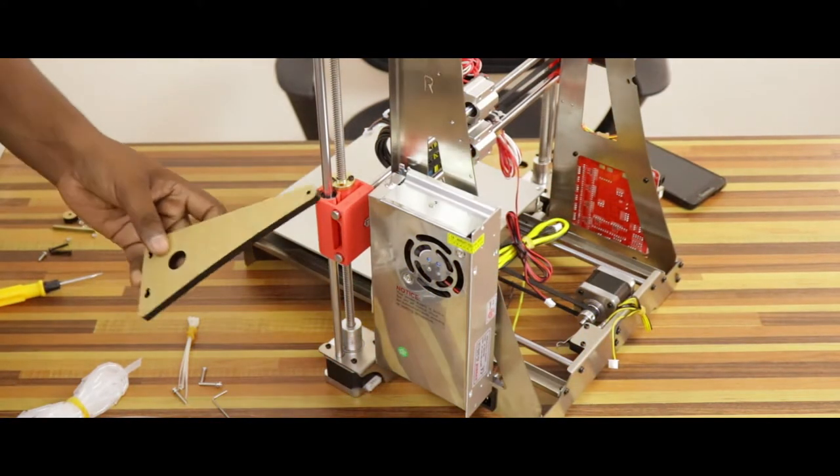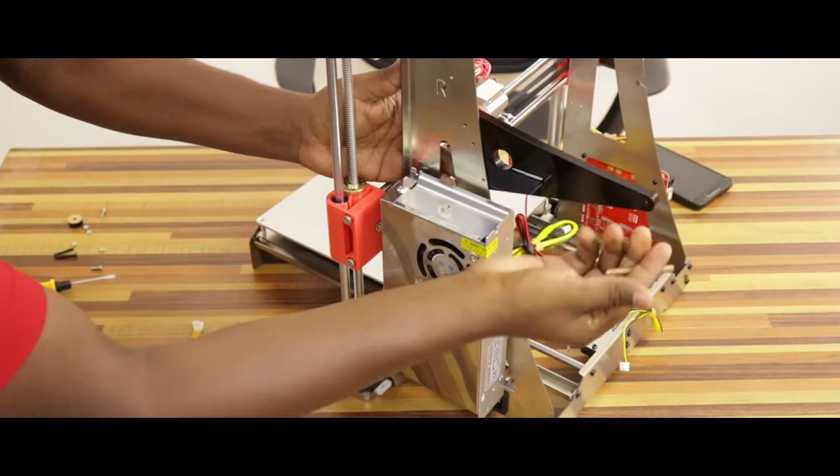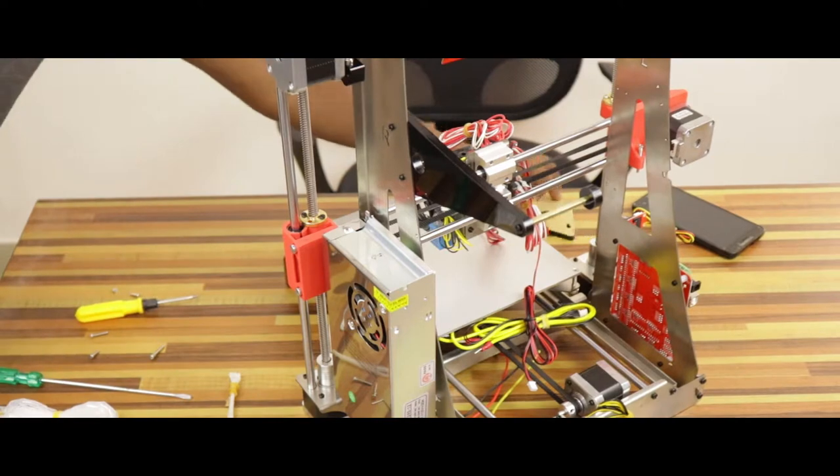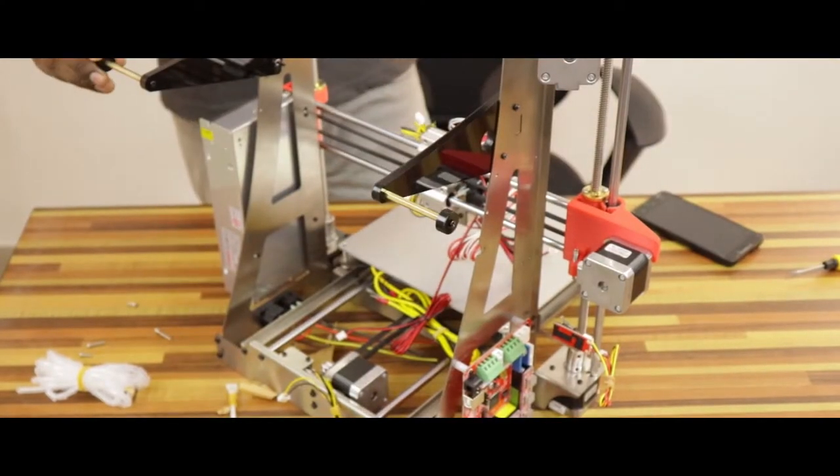Let's attach the filament feeder acrylic sheet to the frame. This is an optional part, so some of you may not get this. I couldn't find the instructions to assemble this part. So, let's try to assemble it on our own.